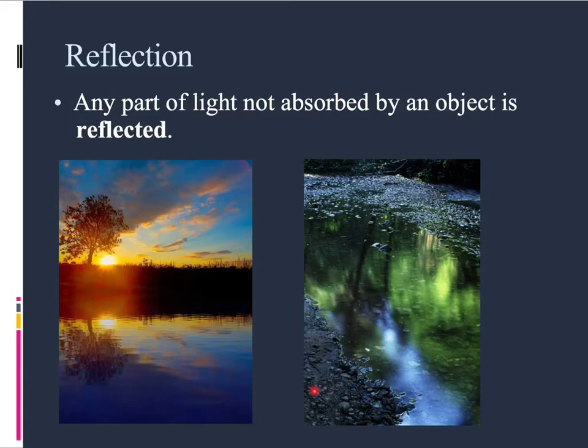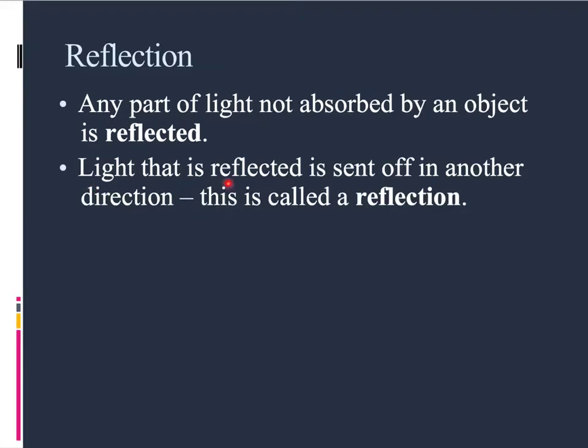Anything that's not reflecting like this, like here where you see the rocks, only some light is reflected. So not all light is always reflected. Sometimes light is absorbed. So light that is reflected is sent off in another direction. And that light that is sent off is what we call a reflection.